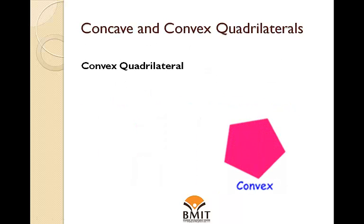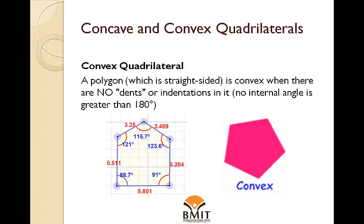Convex Quadrilateral: A polygon which is straight-sided is convex when there are no dents or indentations in it and no internal angle is greater than 180 degrees.